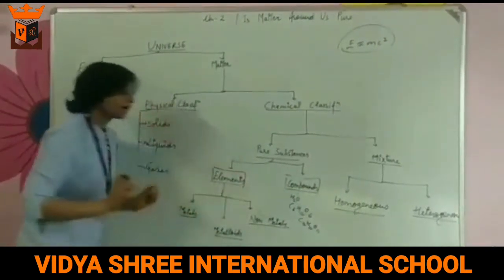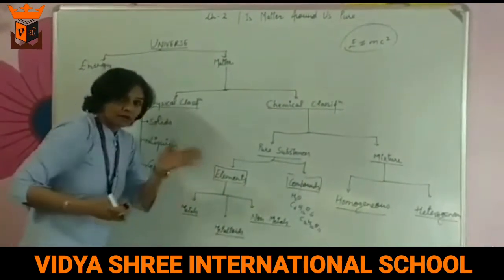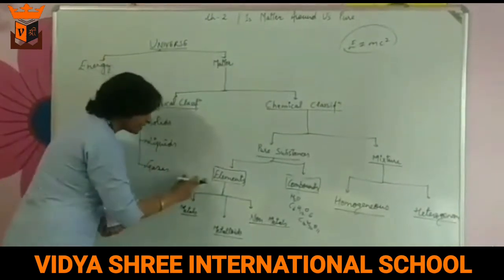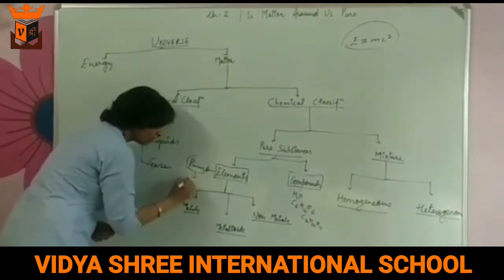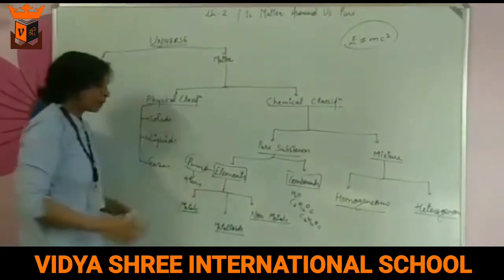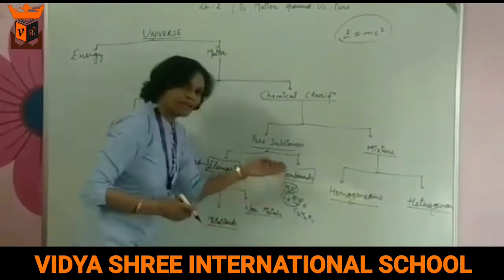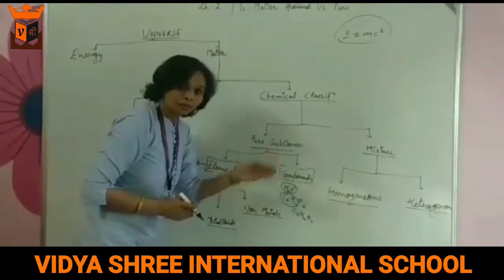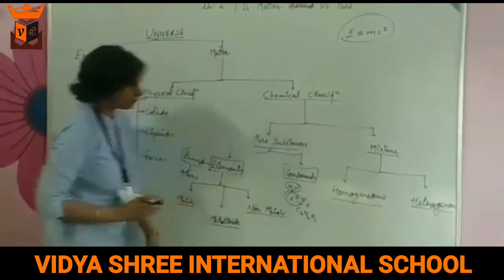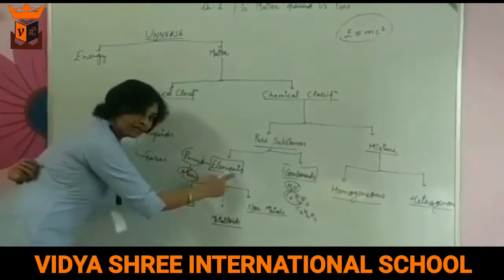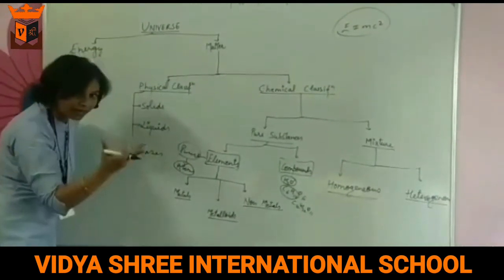Elements are the purest substances because they cannot be separated into constituent atoms. Elements are made up of the same type of atoms. In the case of compounds, they are not made up of the same type of atoms — they are of different types — and so their constituent elements can be separated by chemical or electrochemical processes.